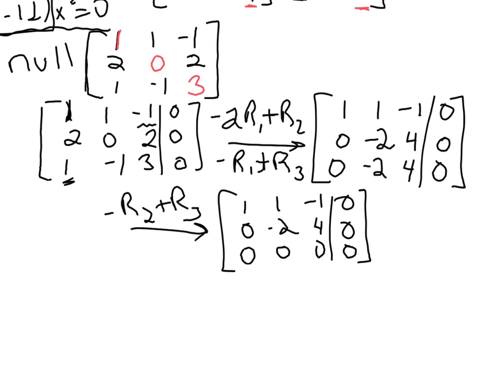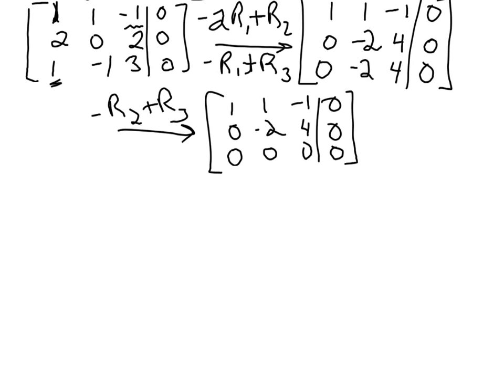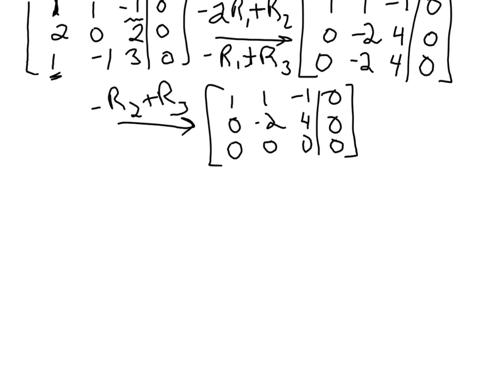So we've got a row of 0s. So we know that this is going to have, or this is a dependent system. It's going to have infinitely many solutions. x3 is going to be a free variable. So for systems like this, I like to go all the way to the reduced row echelon form. I find it easier to parameterize my solution set if I get it all the way, rather than using back substitution. I like to go all the way to the reduced form.